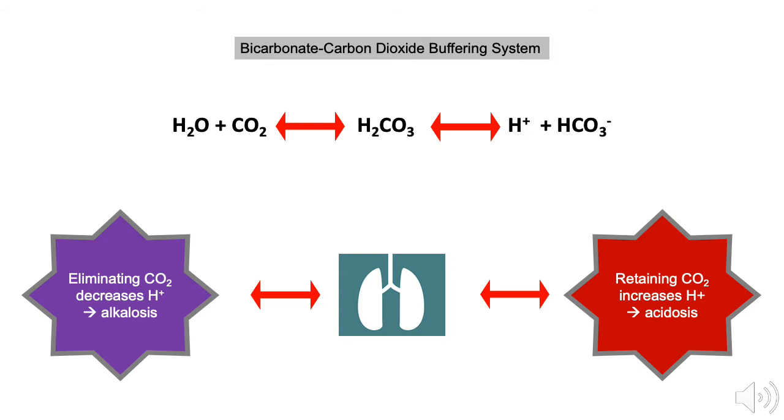The respiratory system can increase or decrease the amount of carbon dioxide removed from the blood. Breathing quickly removes more carbon dioxide. Removing carbon dioxide pulls the buffer equation to the left. Pulling the equation to the left decreases the amount of acidic hydrogen ions. This decreases acidosis and creates a more alkaline environment.